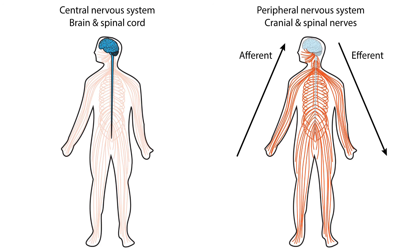The nervous system is divided into two primary components. The central nervous system, or CNS, is comprised of the brain and the spinal cord. The peripheral nervous system, or PNS, is comprised of the cranial and spinal nerves.